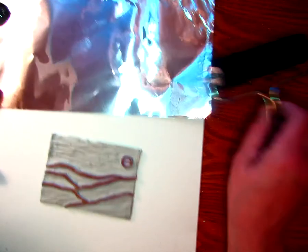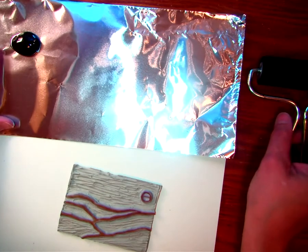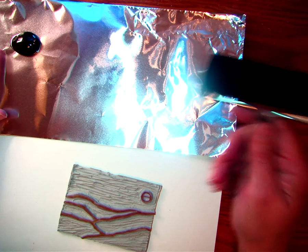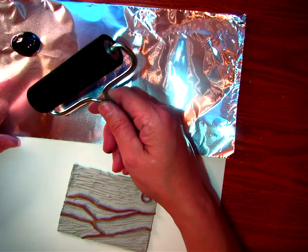So what I've done is I've got my ink, or really it's just acrylic paint, and I've got a brayer, which is just a rubber roller.